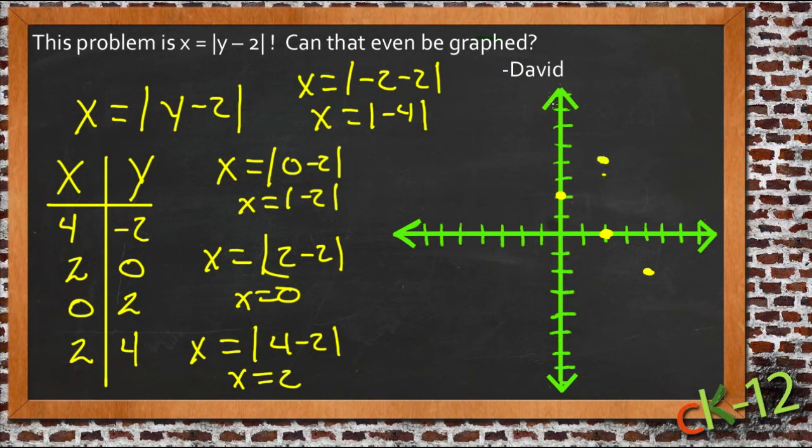Aha! I see. The reason he was confused is because if we have x on the outside and y on the inside, instead of our v-shape going up and down like we had before, the v-shape goes sideways.